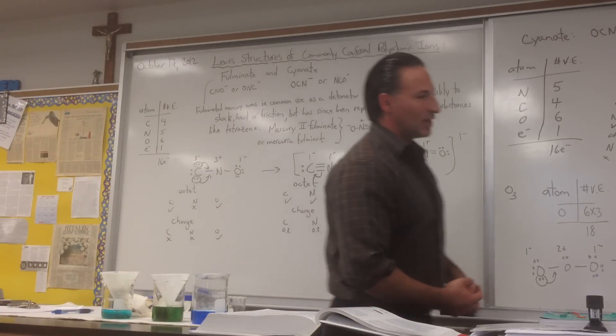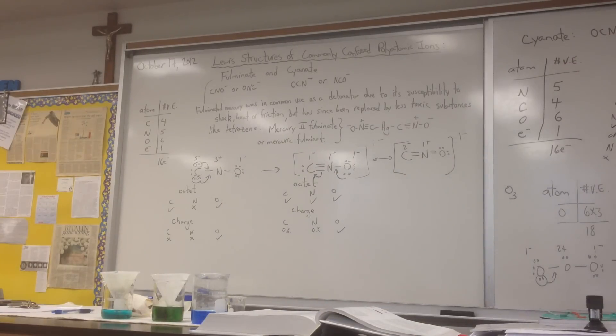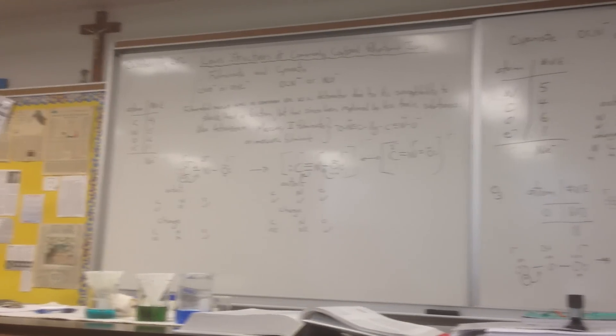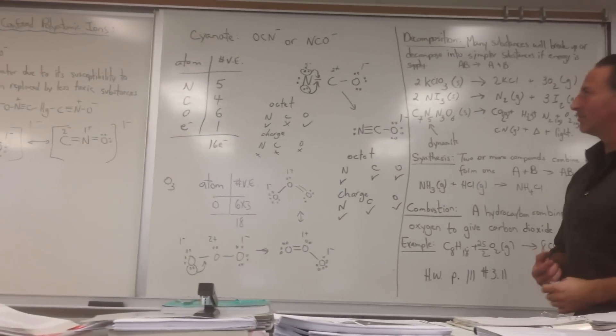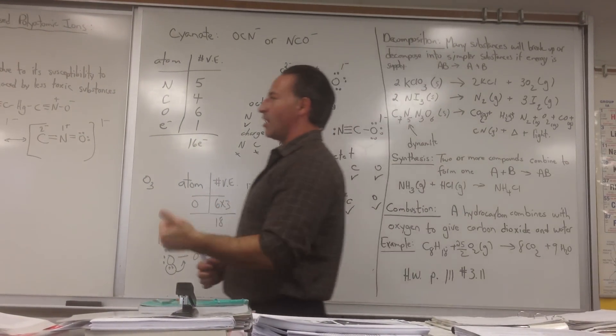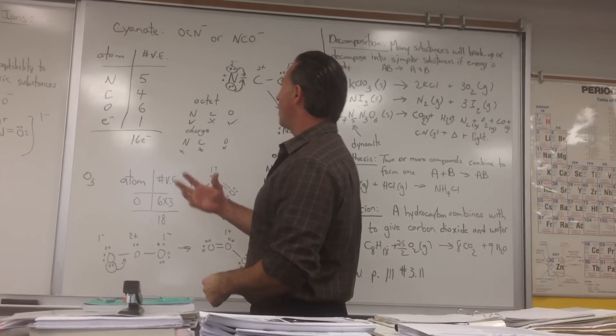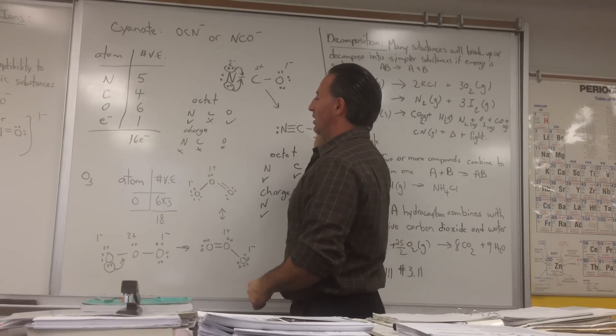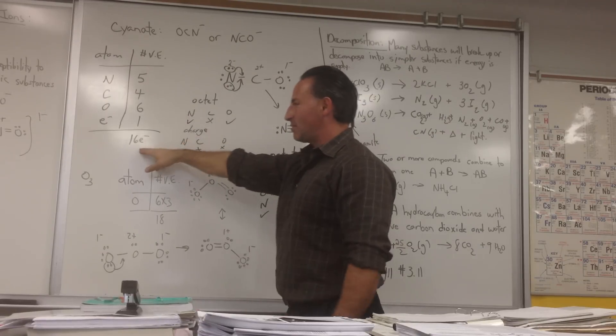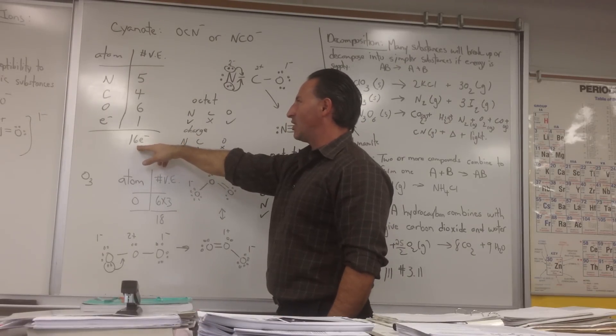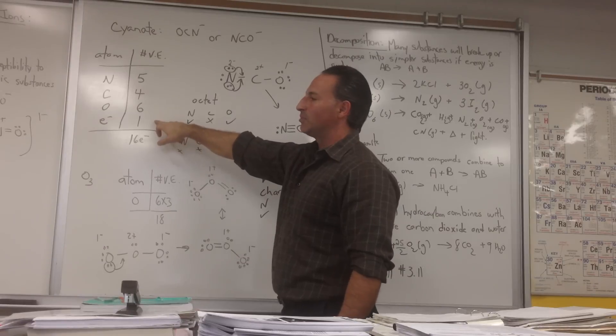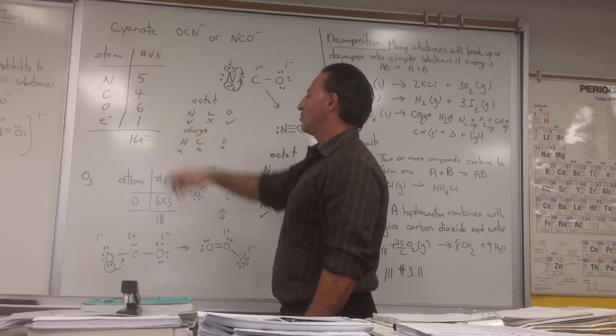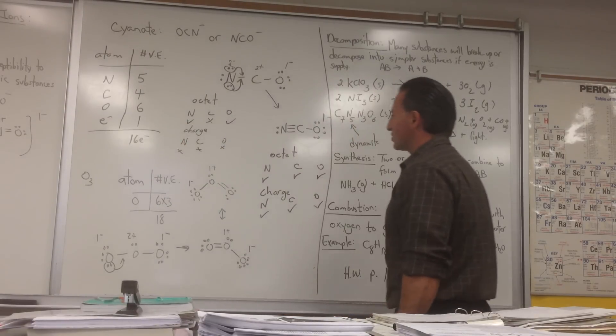On the next board, we look at the structure of cyanate. Now, cyanate has the same atoms in it, carbon, nitrogen, and oxygen, now the carbon atom is the central atom, and the nitrogen and oxygen are on either side. It's got the same number of valence electrons: nitrogen is 5, carbon is 4, oxygen is 6, plus 1 for the negative 1 charge, a total of 16 electrons have to be accounted for in the structure.